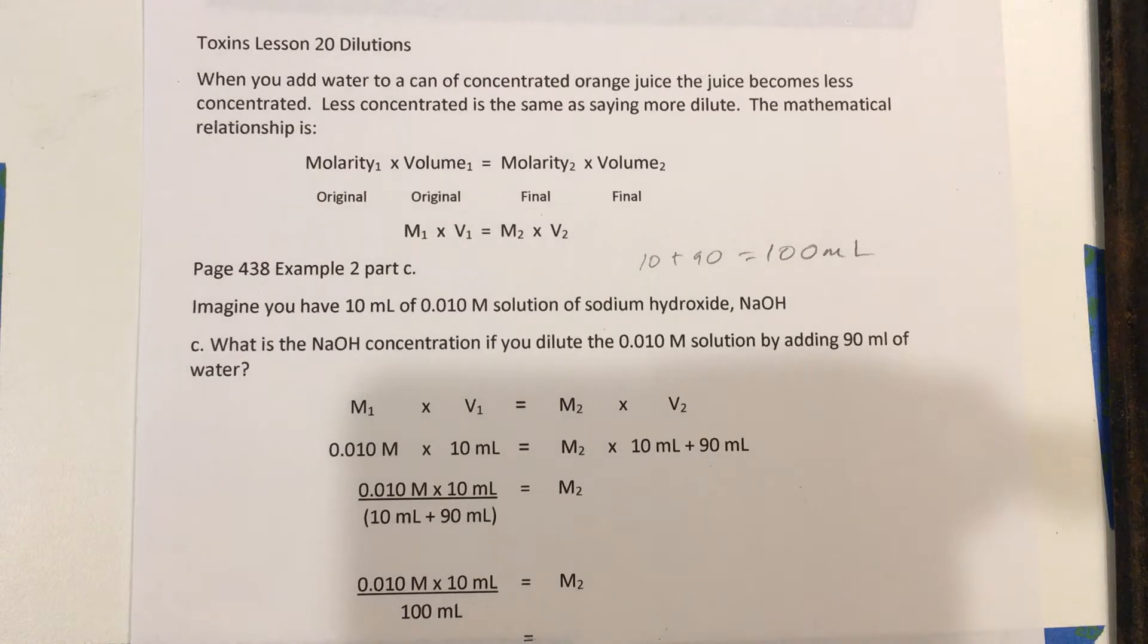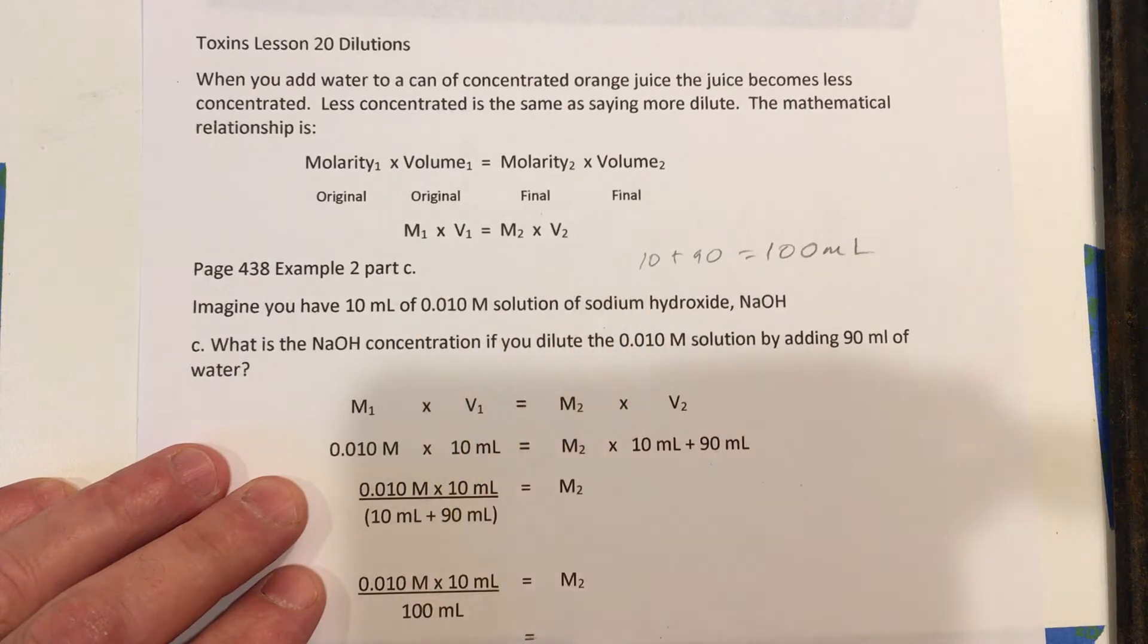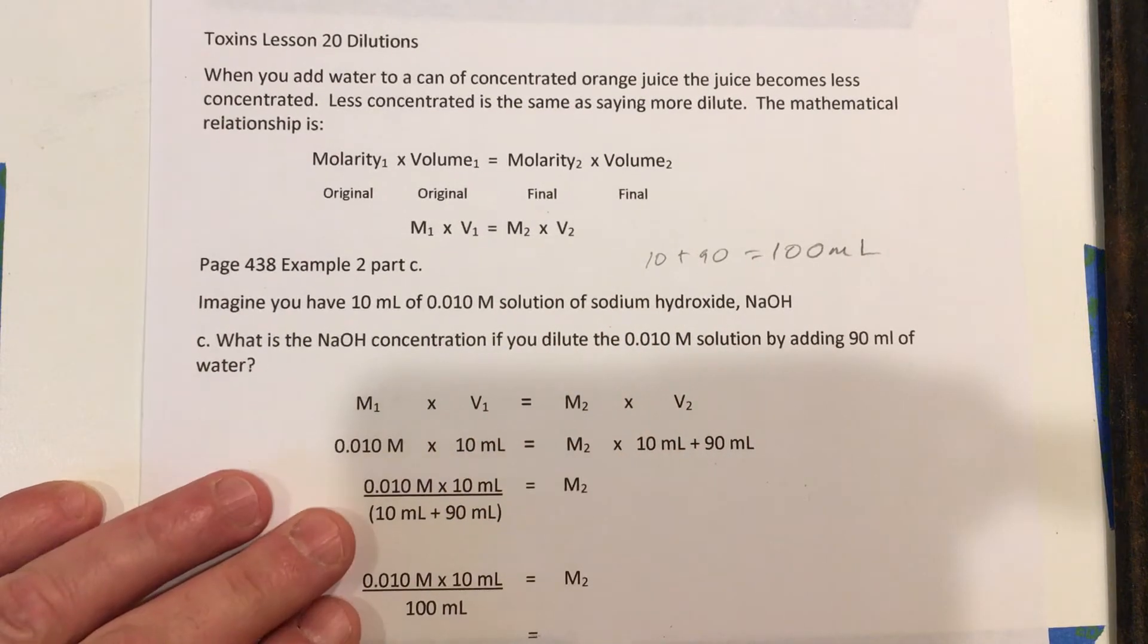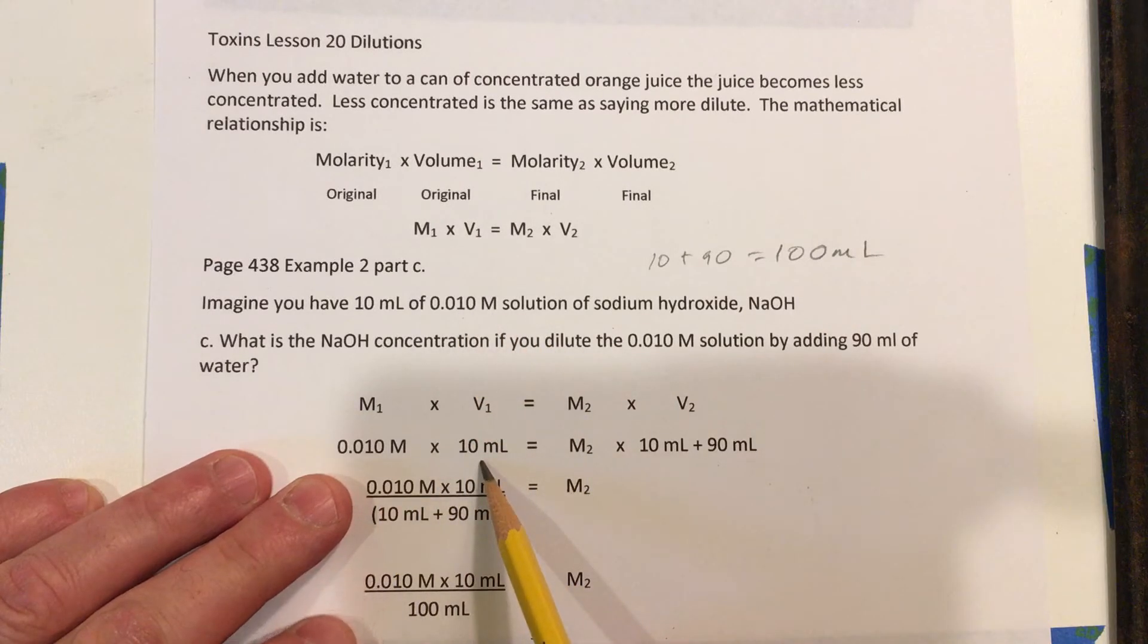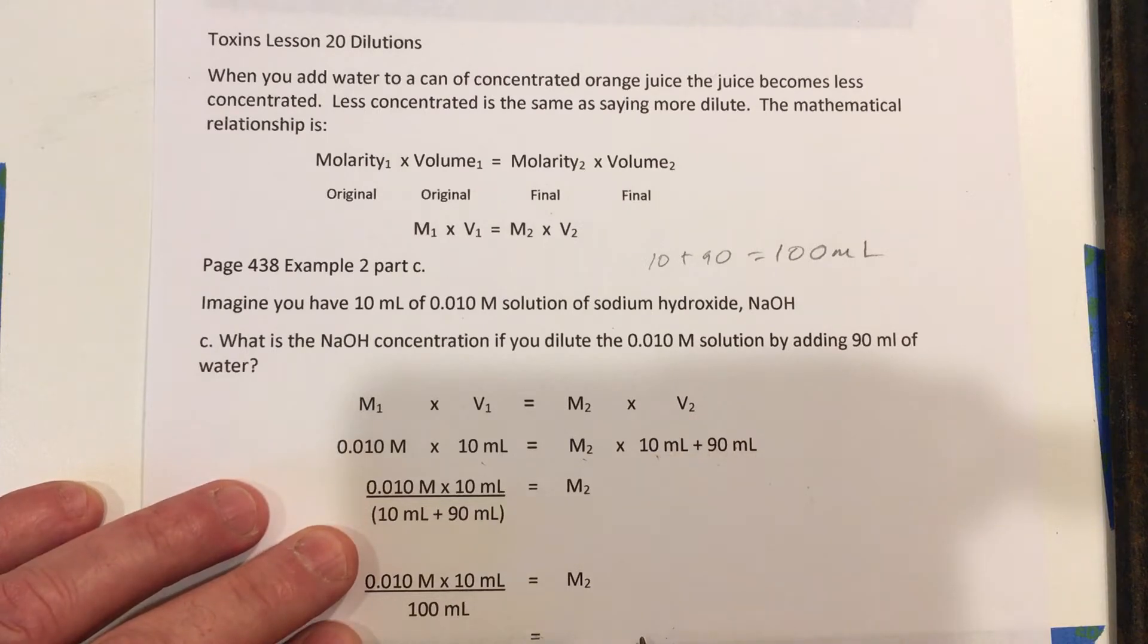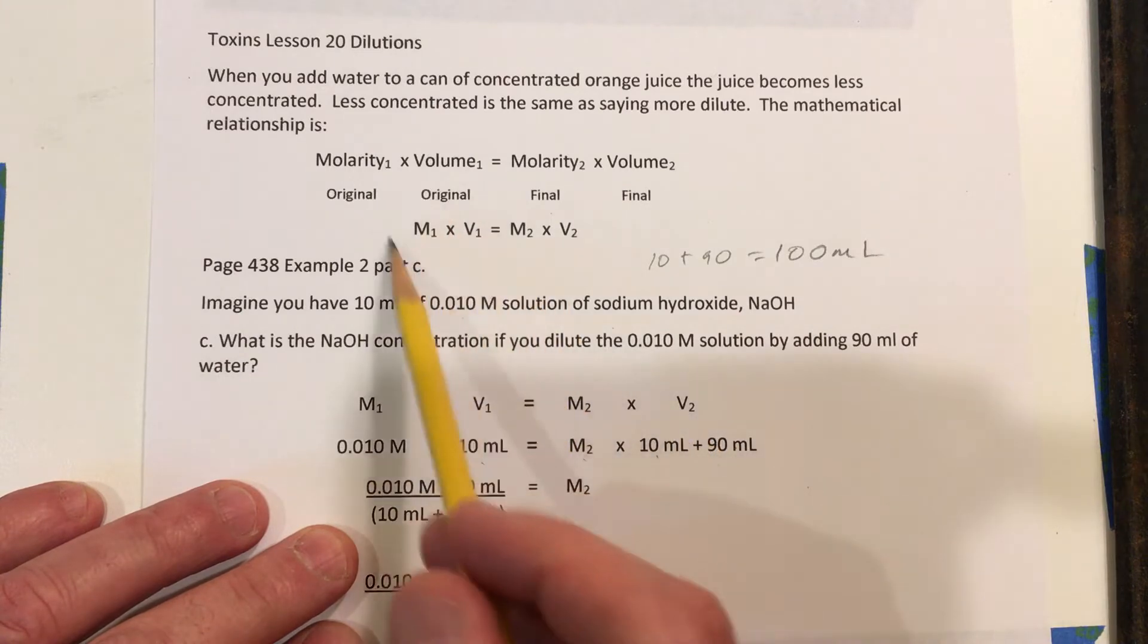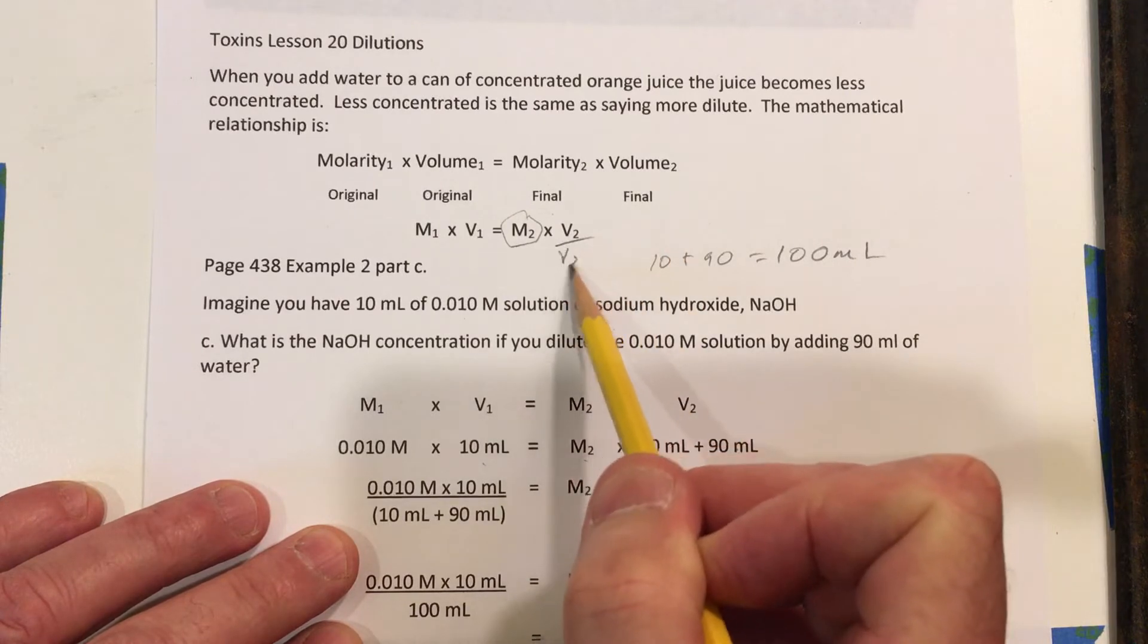But you may be given some unusual numbers that don't make it quite so easy to see, and that's where this formula is very powerful. So let me show you how to use this formula to solve this problem. Our original molarity was 0.010 molar, and the original volume was 10 milliliters. And we want to know, what will the new molarity be if we add 90 milliliters to the original 10? That is, we end up with 100 milliliters total. Since I'm trying to find M2, I need to get it by itself. So I need to divide both sides by V2.